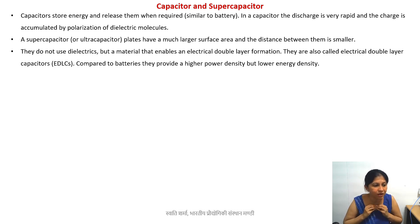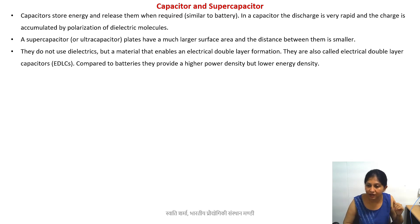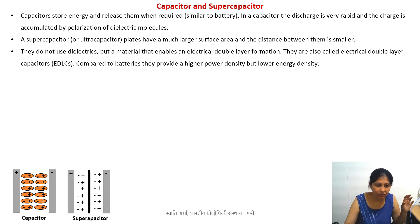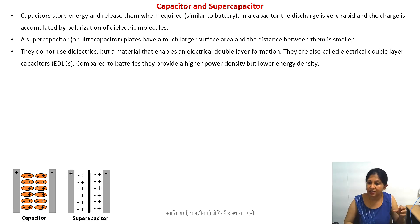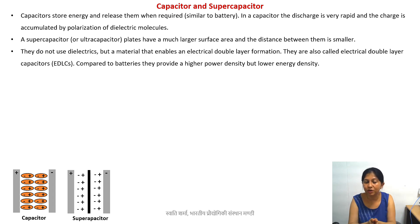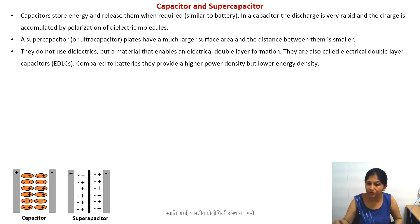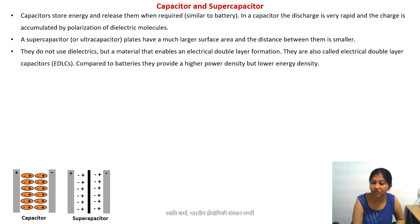In the case of a capacitor, you have dielectric molecules and polarization. But in the case of a supercapacitor, as you can see in the diagram, you have layers of positive and negative charge. One pair with one positive and one negative charge is known as an electrical double layer.